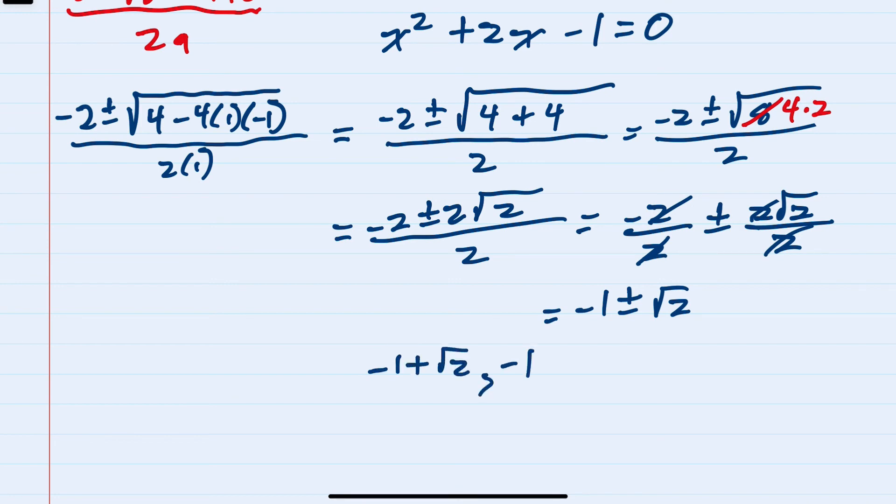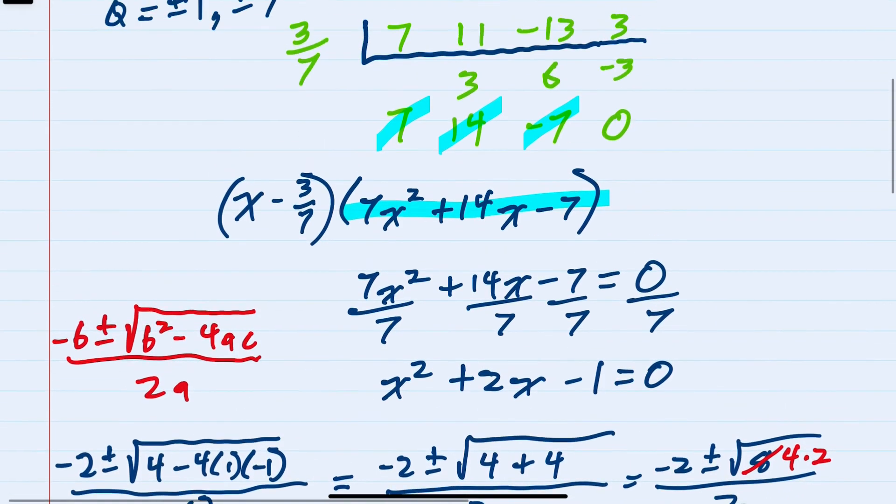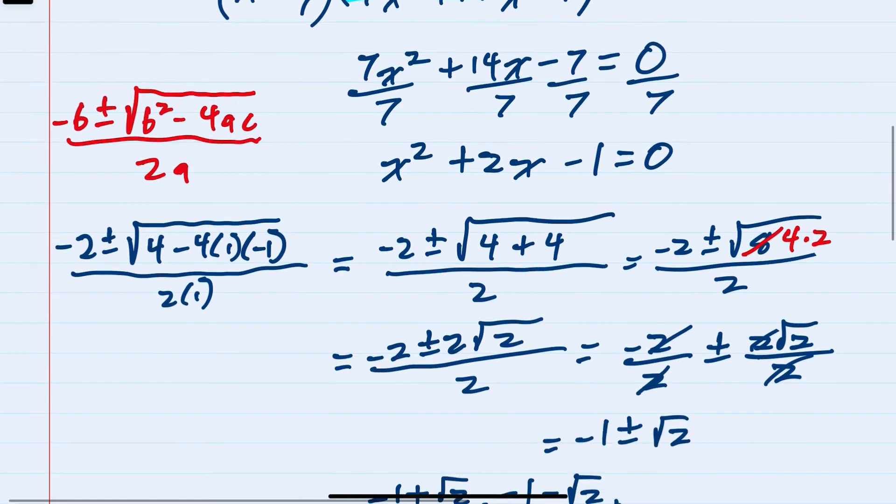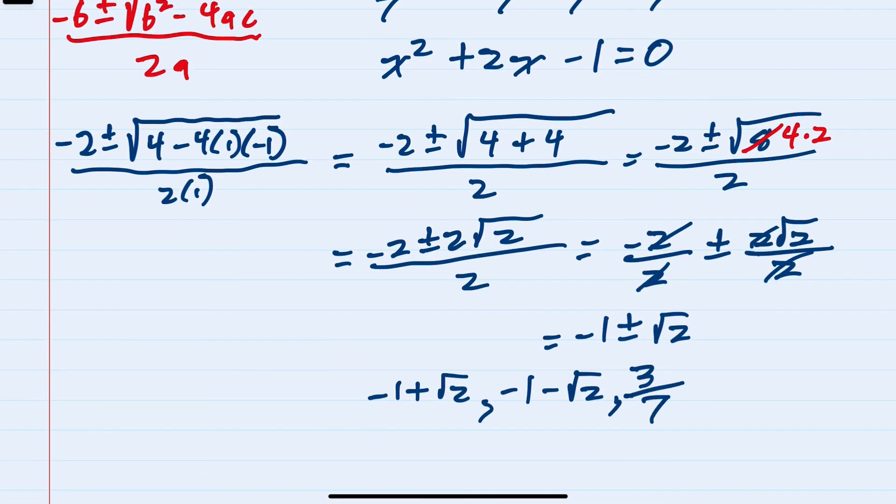So we found two additional zeros: we have negative one plus the square root of two, negative one minus the square root of two, and previously we found three sevenths as a zero. So these are our three zeros.